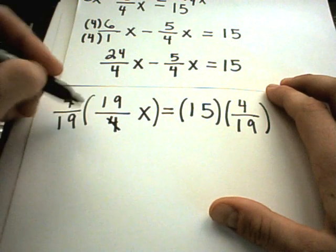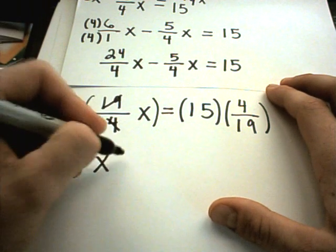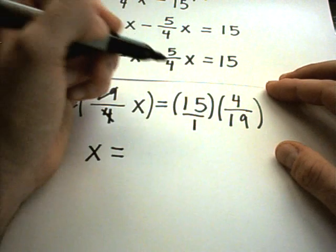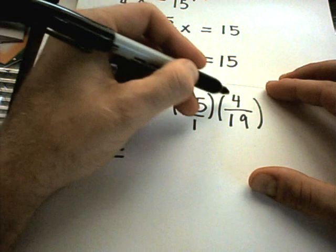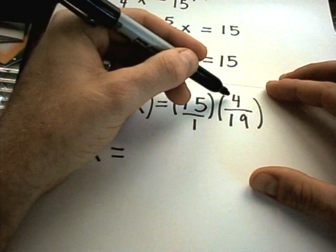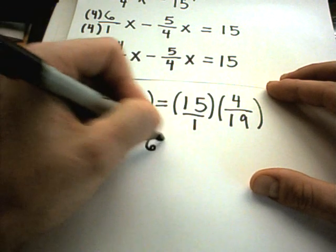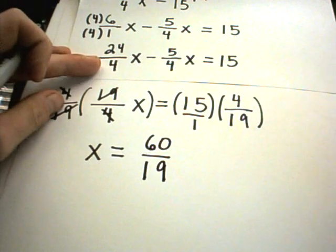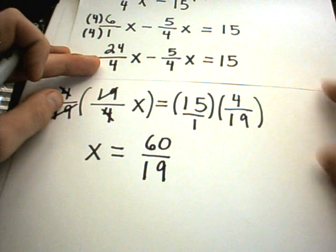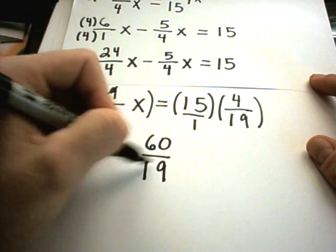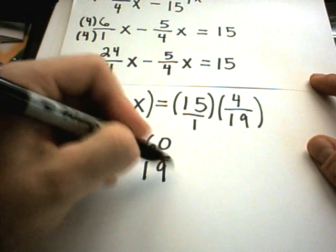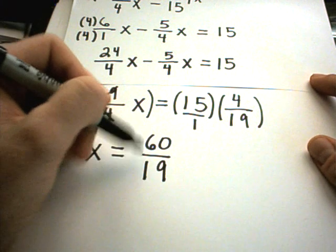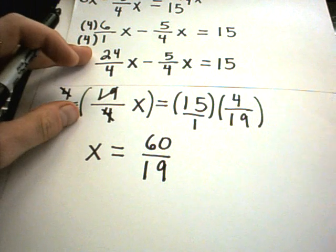Well, the 4s will cancel out. The 19s will cancel out. And I'm left with just x on the left side. And on the right side, you can think about this as being 15 over 1. 15 times 4, well let's see, 15 times 2 is 30, so if I double that again I'll get 60. 1 times 19 simply is 19. And you could think, do I need to reduce this fraction? But if you try to factor 19, recall that 19 is a prime number. So you really can't break this number down any further.